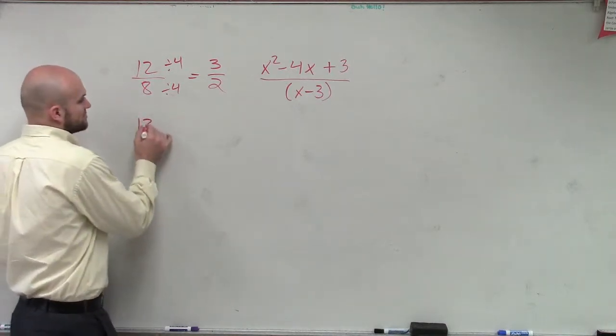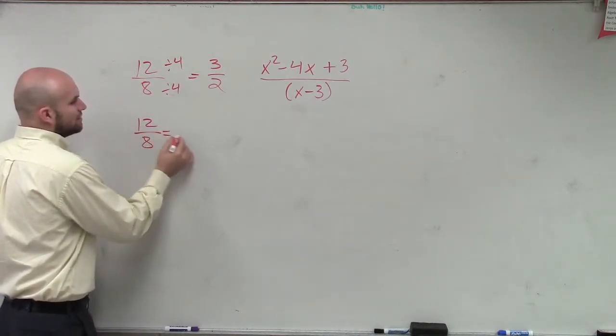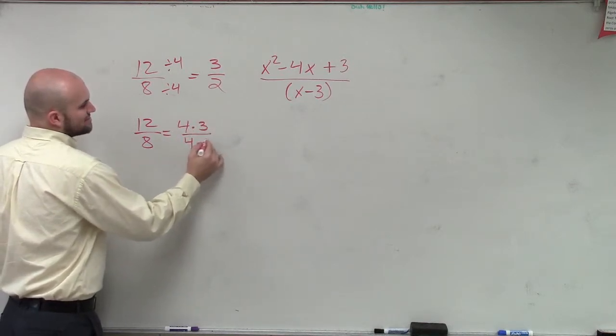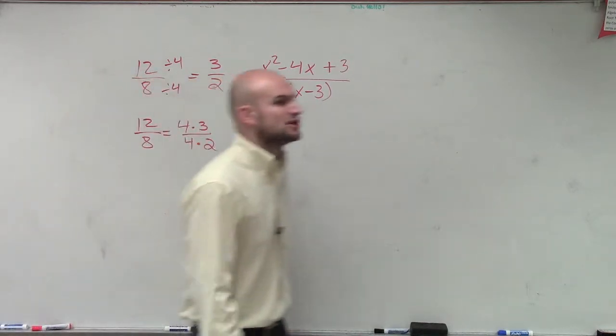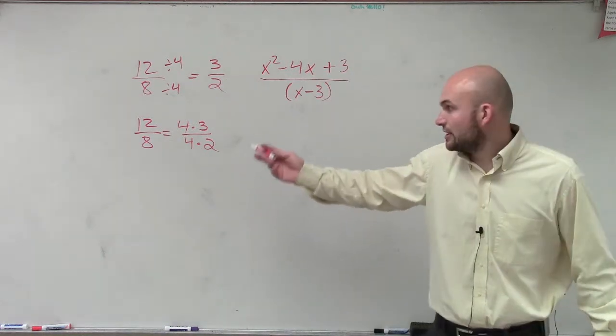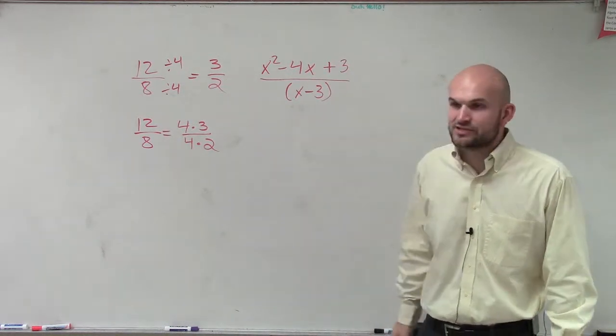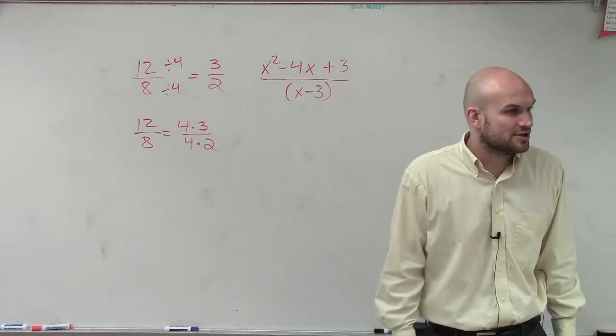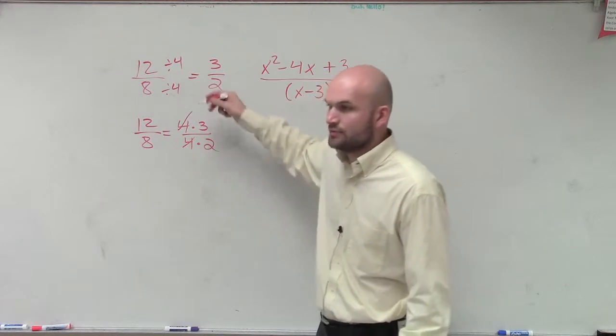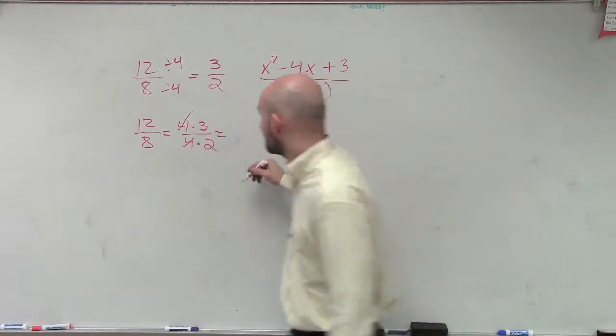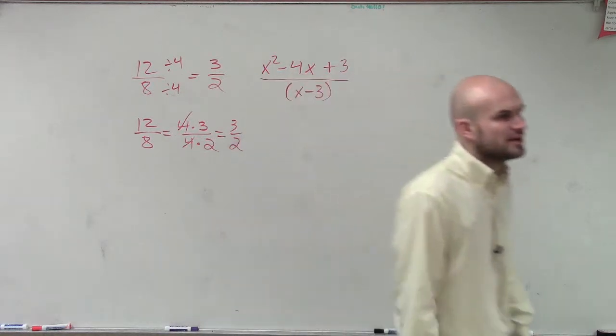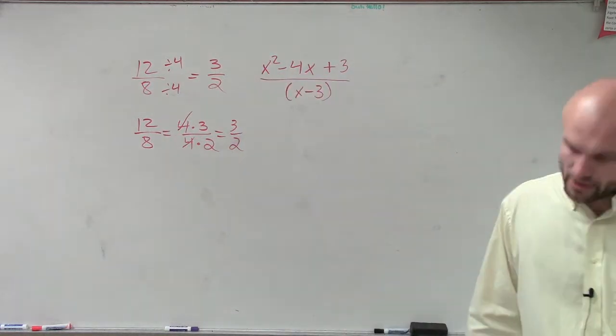The other way I want you guys to look at this is let's say I wrote 12 over 8 equals 4 times 3 over 4 times 2. This is just another way to look at it. Does everybody agree with that? Does everybody agree 12 divided by 8 is the same thing as 4 times 3 is the same thing as 4 times 2, right? Does everybody agree, then, that 4 divided by 4 is 1 and we're just going to leave our answer as 3 over 2? Does everybody agree with that? Sure. Okay. Good.